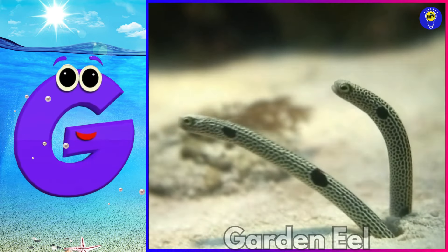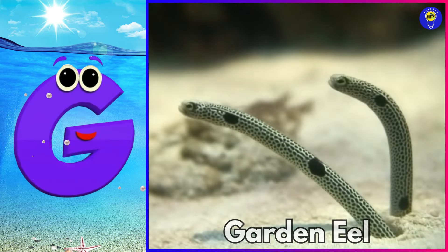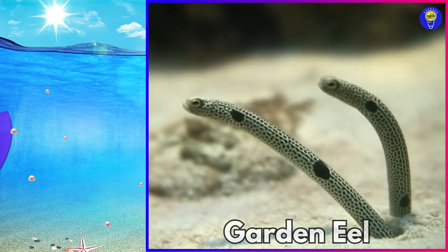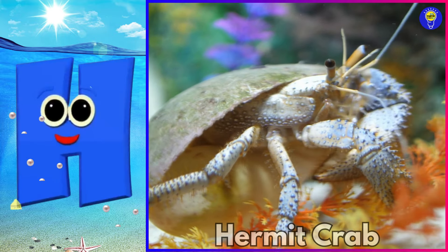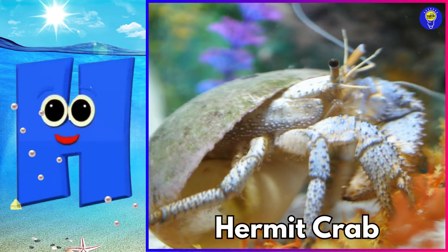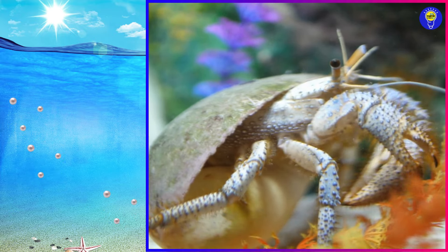G is for garden eel. Guh, guh, garden eel. H is for hermit crab. Ha, ha, hermit crab.